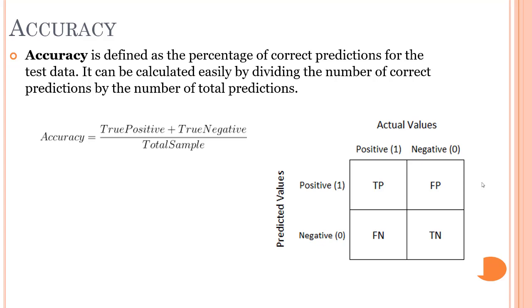Now that we know about what exactly is a confusion matrix and the different terminology — true positive, false positive, true negative, and false negative — as well as which are known as Type 1 error and which are known as Type 2 error, let's look at the different classification metrics for classification problems.